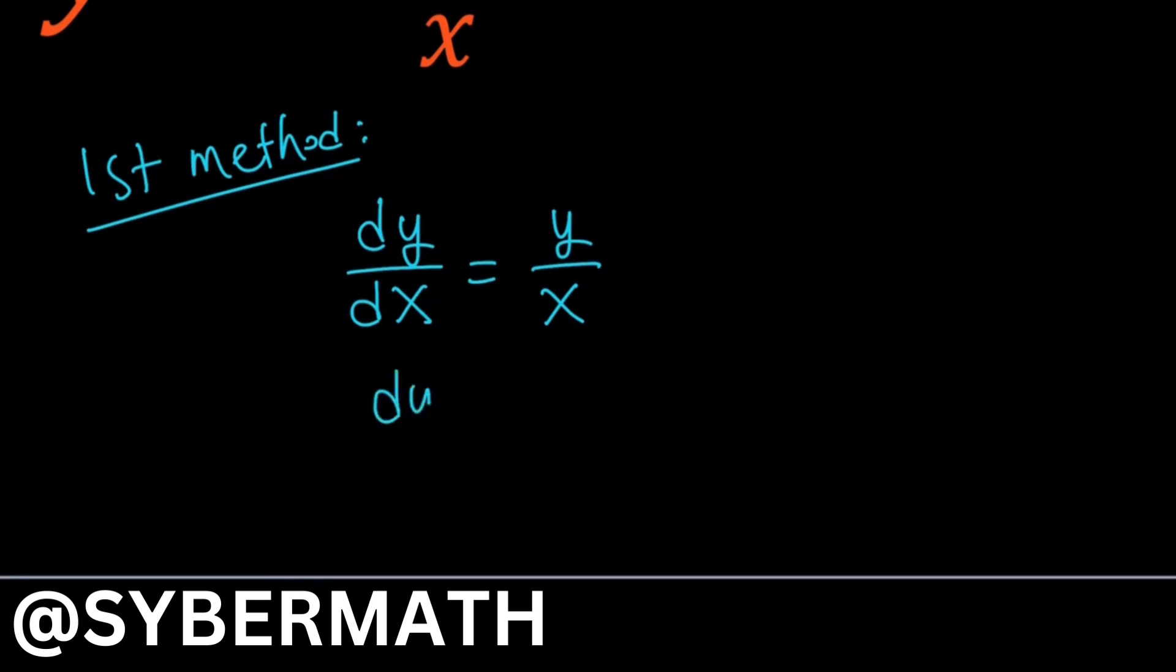So let's go ahead and separate the variables. Put the y on the left, divide by that, and put the dx on the right, multiply by that, and you'll get this. Now this is really cool because the variables are separated, so I can integrate.